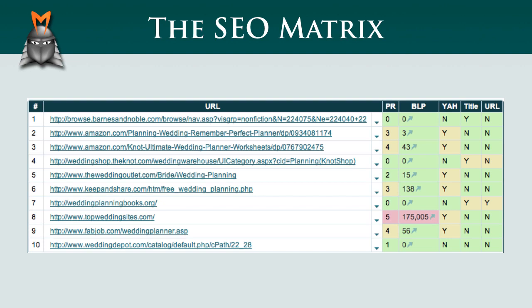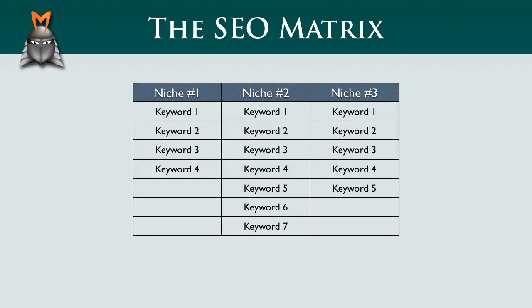Now that you understand a bit more detail about what these columns actually mean, let's quickly recap where you should be up to at this point in the challenge. Your action steps from the last video were to become familiar with the Market Samurai SEO matrix and to create a simple table that contains the three niches you're exploring, and then for each niche, the phrases that met our initial traffic and competition criteria. Let me now show you an example of this.